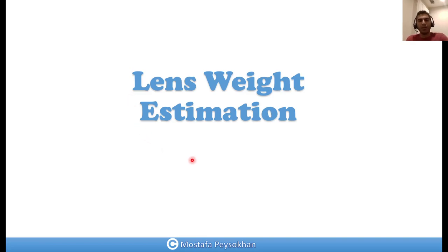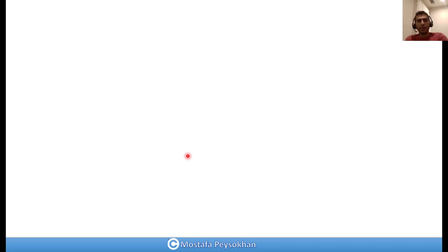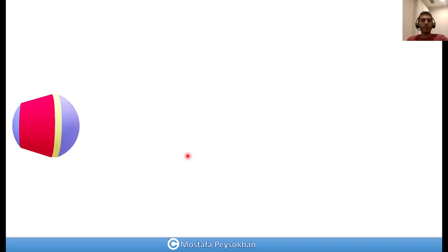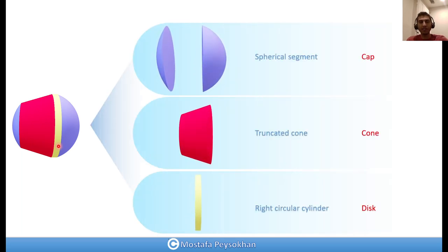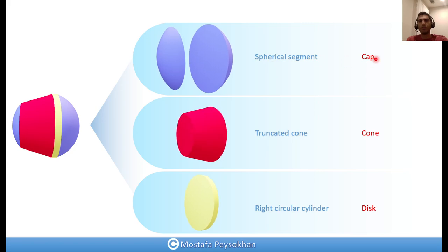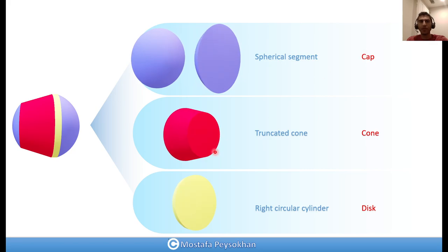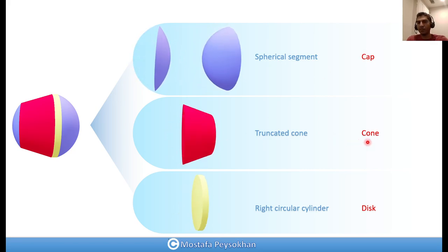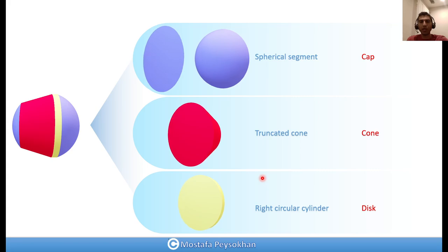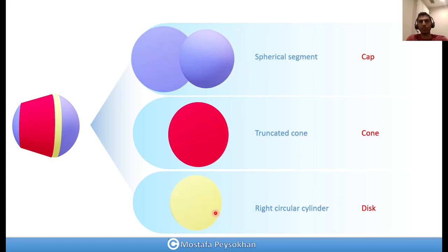In this lesson we're going to talk about how we can calculate the weight of different kinds of lenses. For example, in this image we can see a lens that has two caps, a conical sector, and a straight cylinder. We can decompose each lens into three sub-segments: the spherical segment, which we call a cap; a truncated cone, or simply a cone; and a right circular cylinder, which we call a disc.